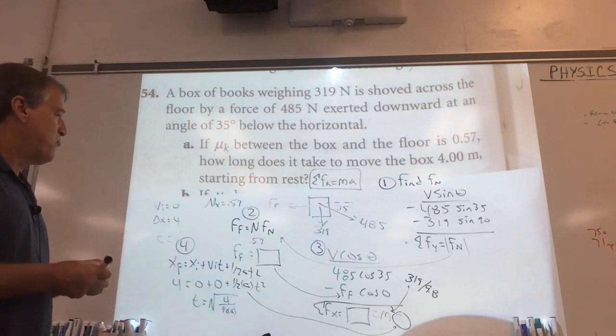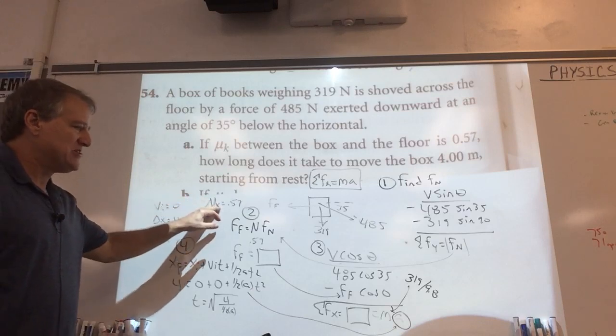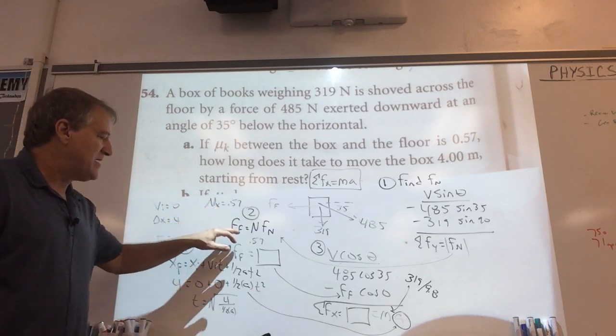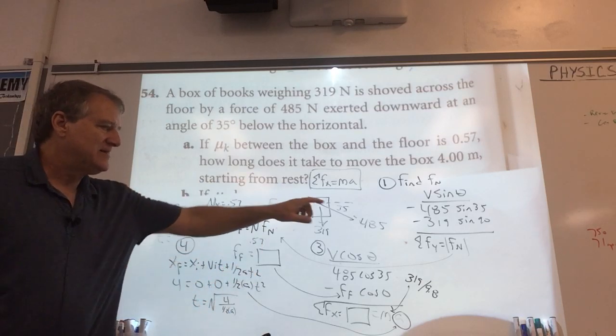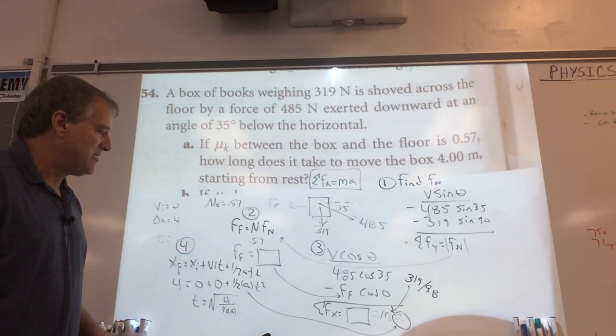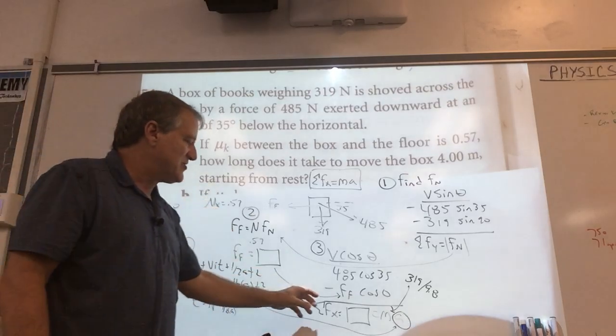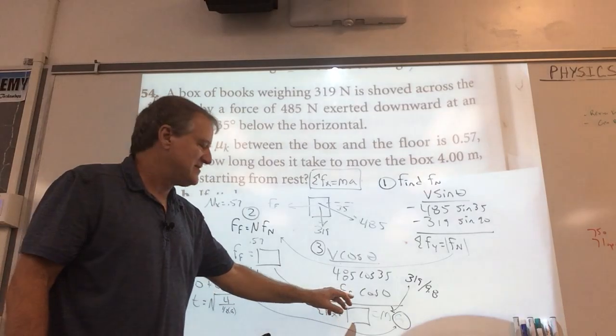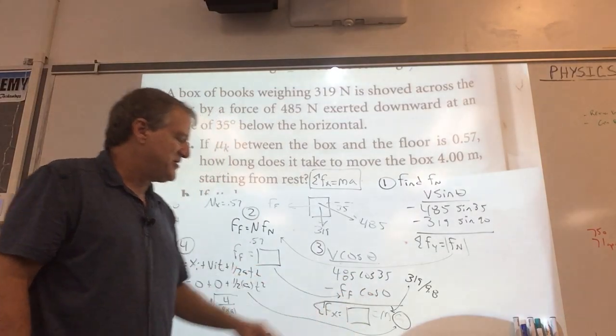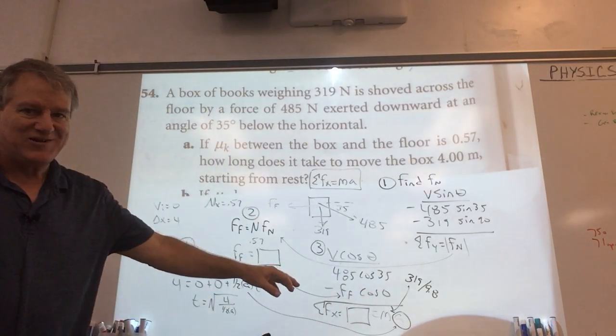B says, hey, what if the mu sub k changes? Well, the lucky thing is you can go right to step 2 and just multiply the new mu value times what you got in the first part. And then that goes over here. 485 cosine 35 minus that product times the cosine of 0. That gives you a new f of x. Solve for your a.